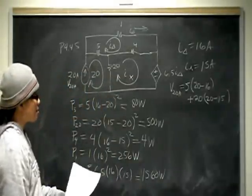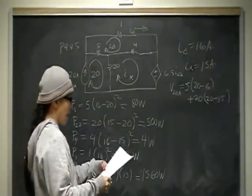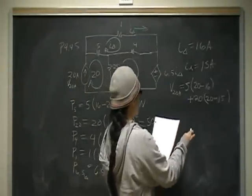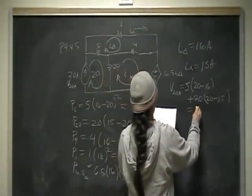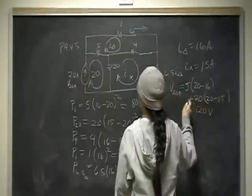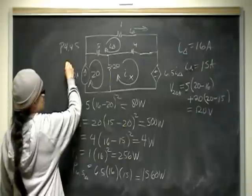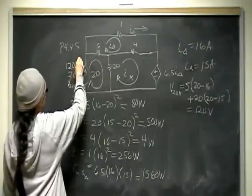And when you do that, you should come up with this value as 120 volts. So this 20 amp independent current source has a voltage of 120 volts.